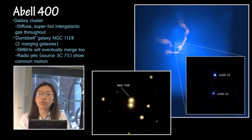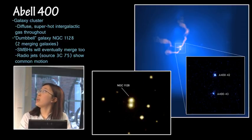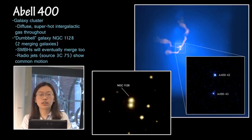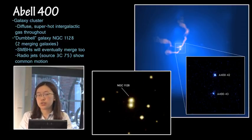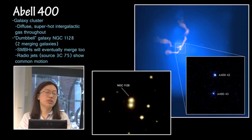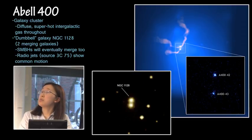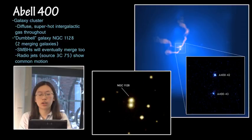Our next DSO is Abell 400, a galaxy cluster. In the Chandra X-ray image you can see it's permeated with very diffuse but very hot intergalactic gas that glows in X-ray — all the blue in that image. This cluster contains what's called a dumbbell galaxy, NGC 1128, in the lower left — actually two merging galaxies whose supermassive black holes will eventually merge as well. From the radio source 3C75 you can see that these two are gravitationally bound, and the distortion of their radio jets comes as they move together through the diffuse intergalactic gas.